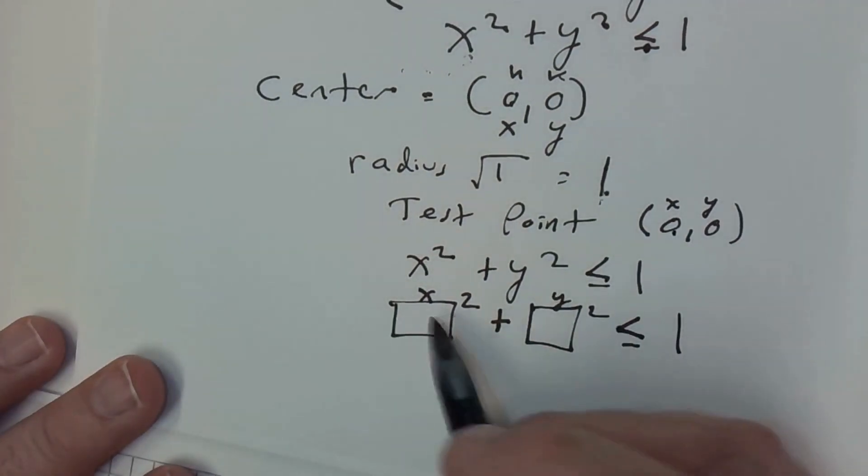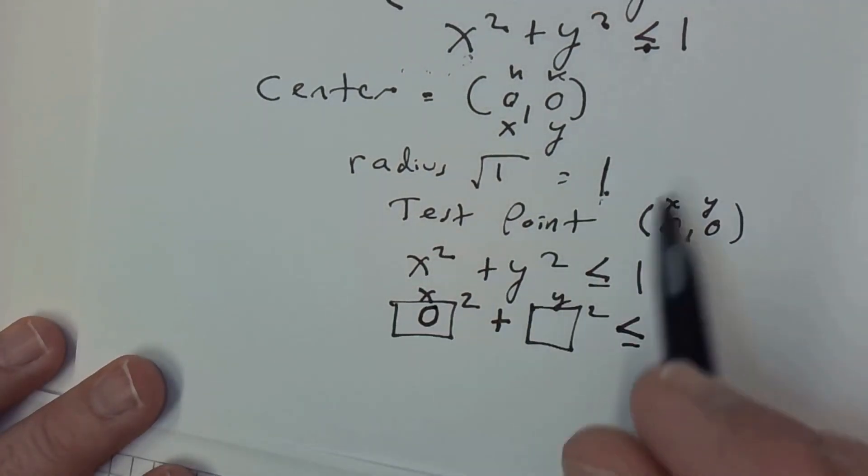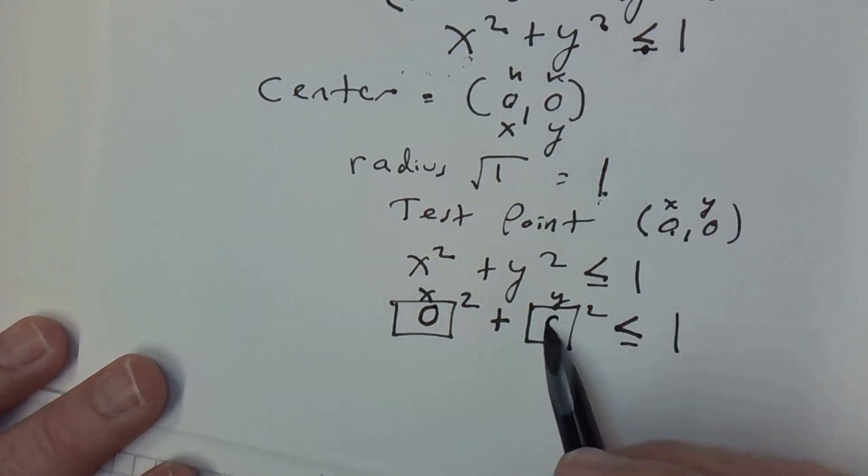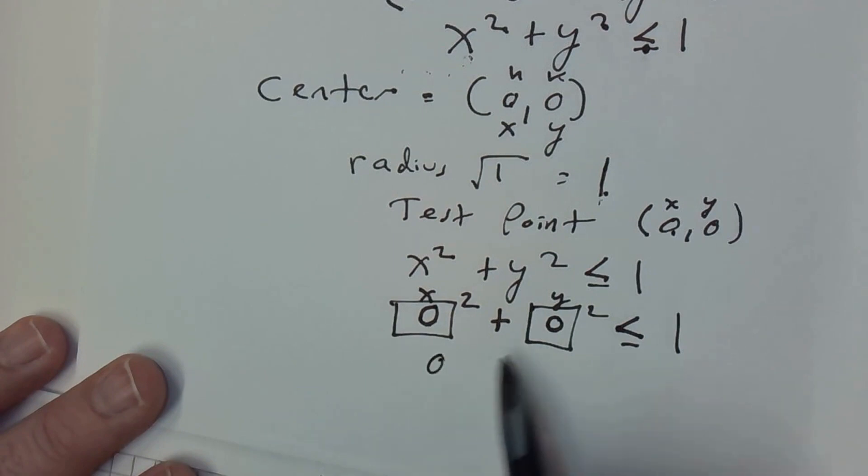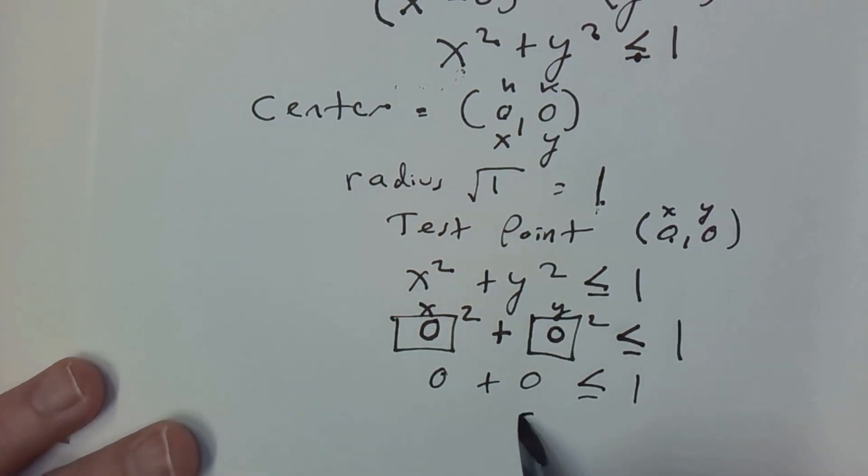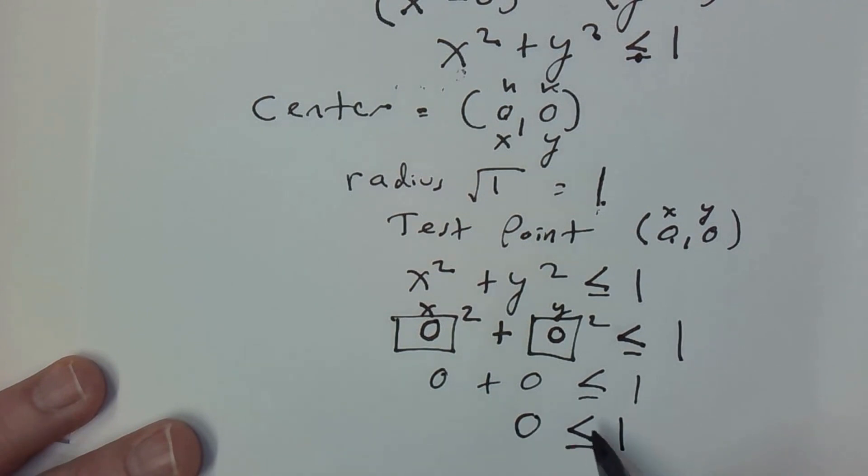Let's place our x test point here. And let's put our y test point there. 0² is 0 and 0² is 0 and 0 + 0 is 0. Is it true that 0 is less than or equal to 1? Yes, it is.